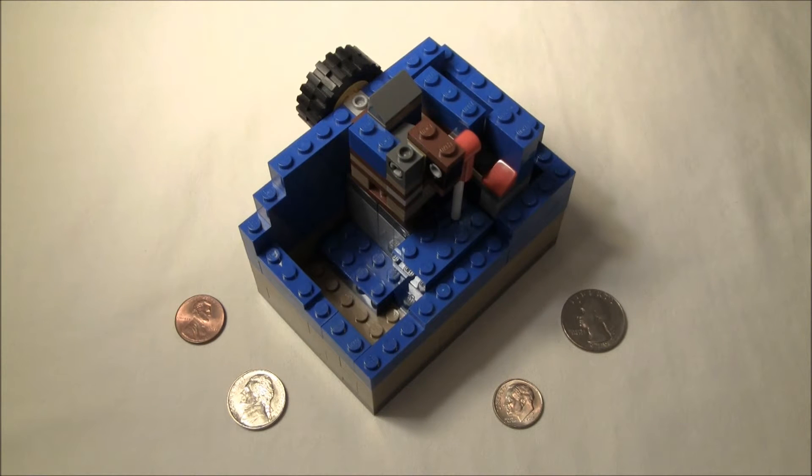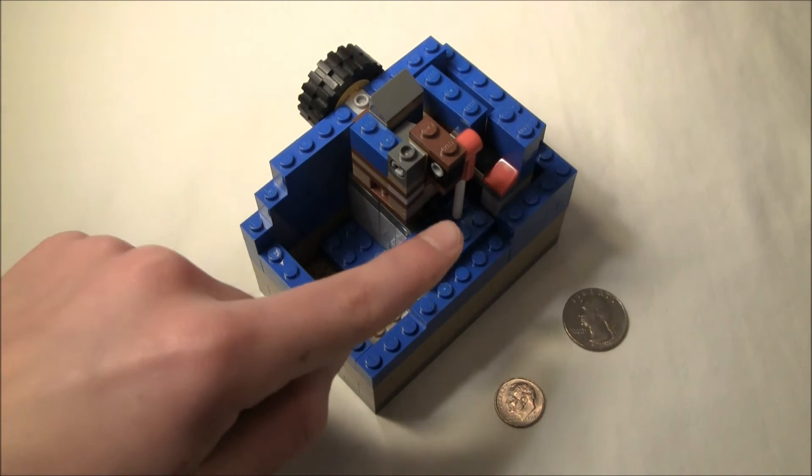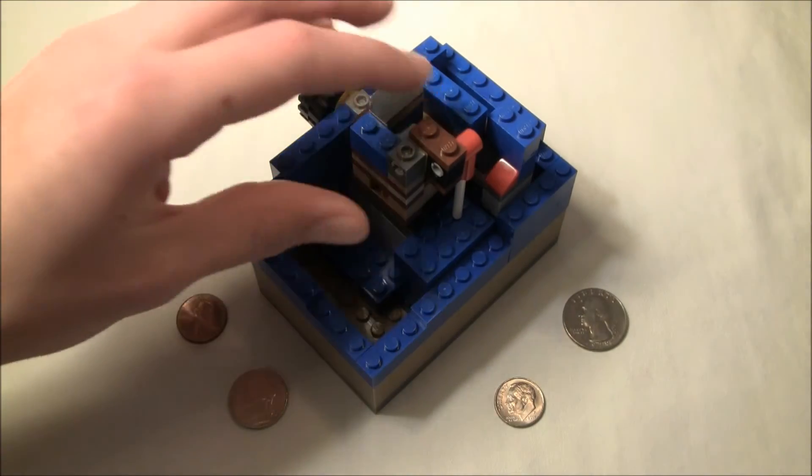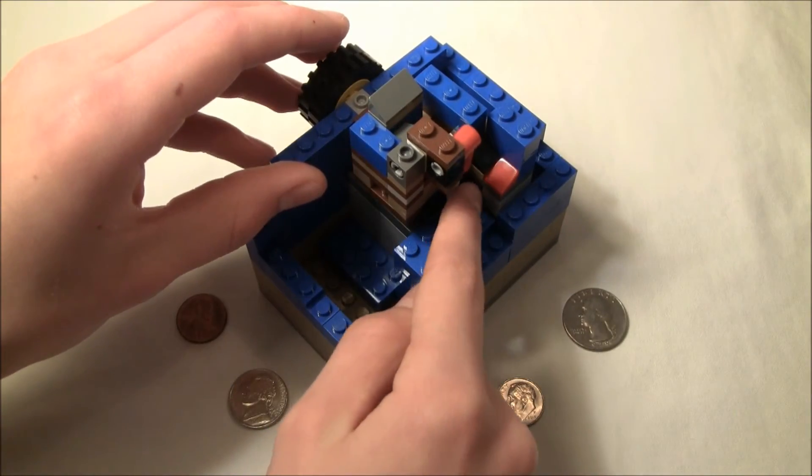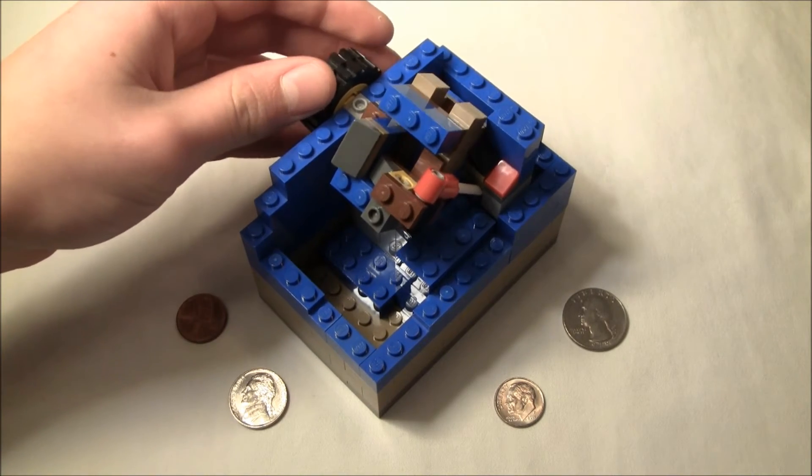You are probably wondering how this works now. I am going to show you the mechanism. The most important part is this white pin back here. You will notice there is a little gap back there that this pin gets caught in. You cannot twist without a coin.